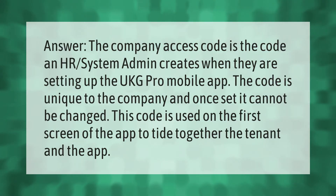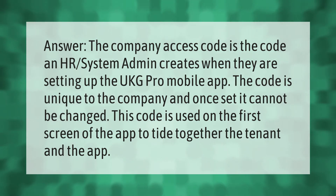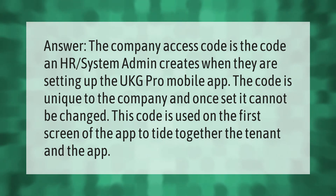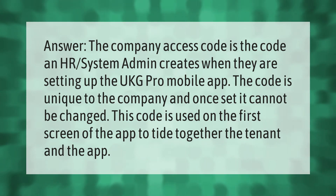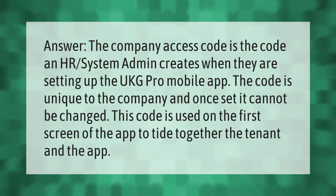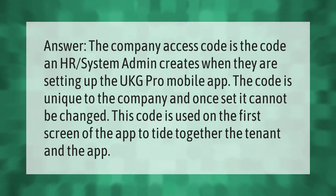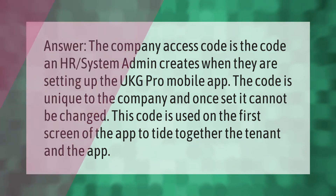The company access code is a code an HR system admin creates when setting up the UKG Pro mobile app. The code is unique to the company, and once set it cannot be changed. This code is used on the first screen of the app to tie together the tenant and the app.